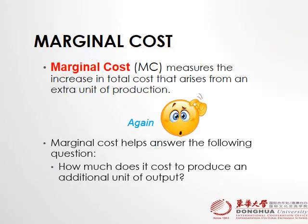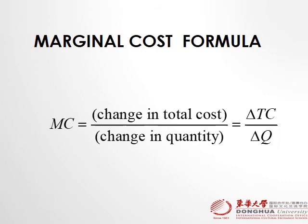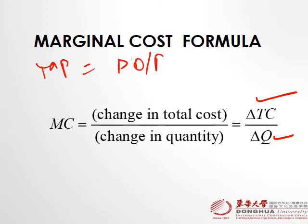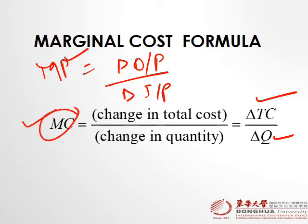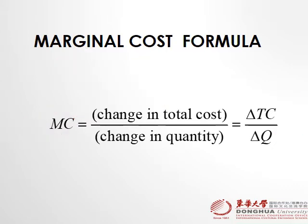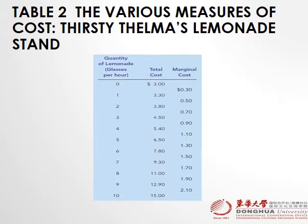The formula for marginal cost is: change in total cost divided by change in quantity. Compare this to marginal product, which is change in output divided by change in input. The difference is that marginal product deals with output, while marginal cost deals with cost — change in cost divided by change in quantity.